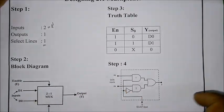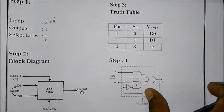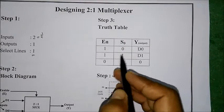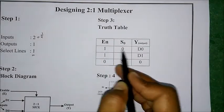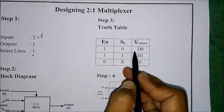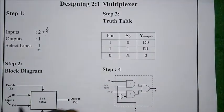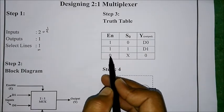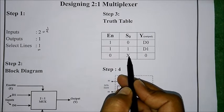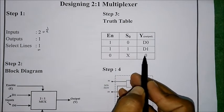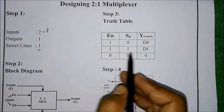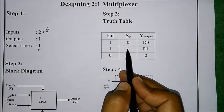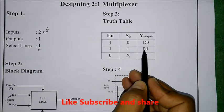Based on the select line values, it selects one of the inputs. When the enable is high and the select line value is 0, it selects input d0. When the select line value is 1, it selects d1. When enable is 0, whatever the select line value — 0 or 1 — the output is always 0. So when select line is 0, output is d0; when select line is 1, output is d1.